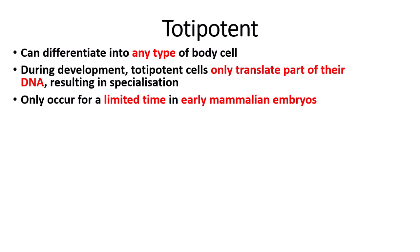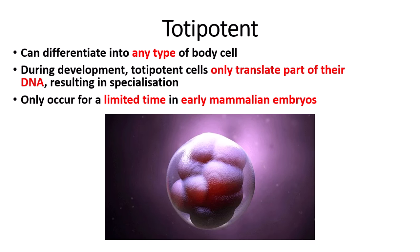Totipotency can only occur for a limited time in very early mammalian embryos — it is only maintained for the first couple of divisions of a zygote. So totipotent stem cells are not available for a very long time, but during that time they can differentiate into any type of cell.